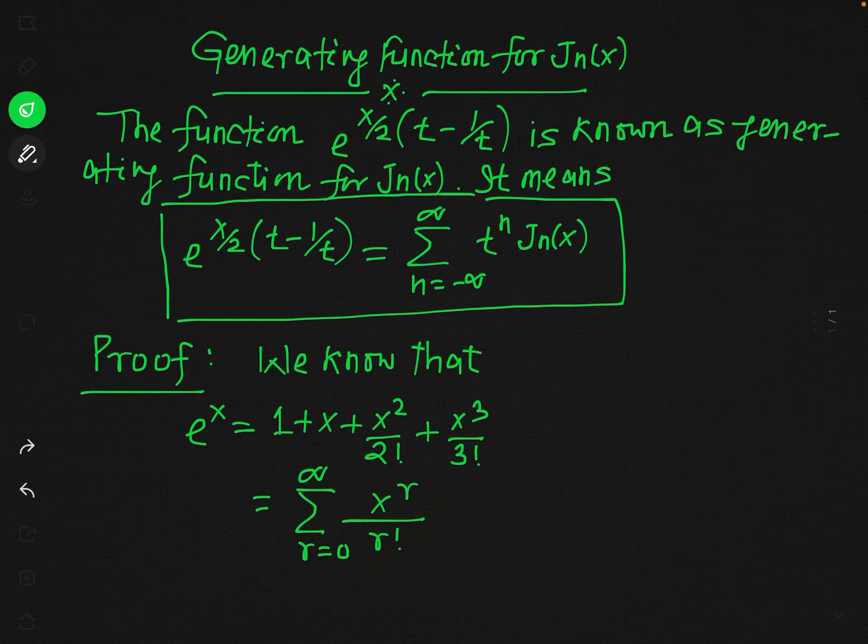Today we are going to discuss the generating function for Jn(x). Jn(x) means the Bessel function. The function e raised to the power x over 2 into (t minus 1 over t) is known as the generating function for Jn(x). This means we can express e^(x/2)(t - 1/t) as a summation from n equals minus infinity to plus infinity of t raised to the power n times Jn(x).